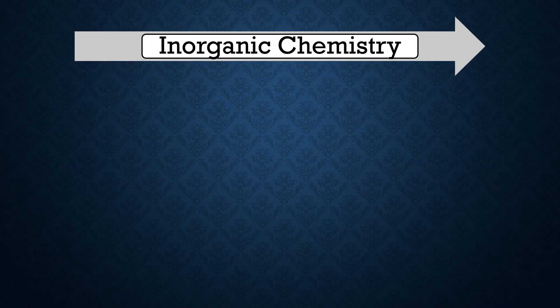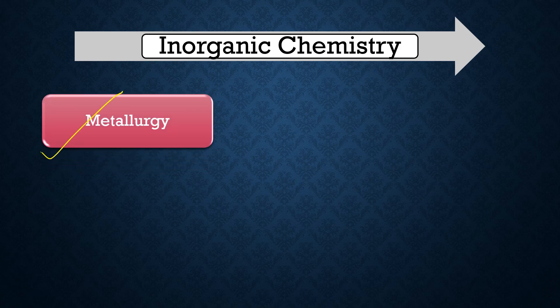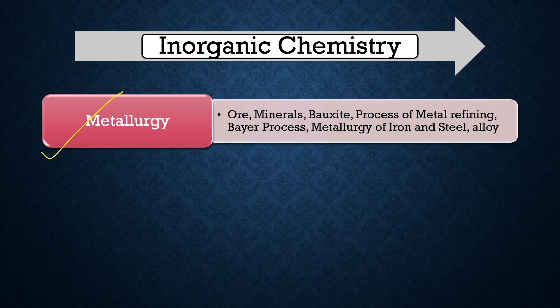First, we will start with inorganic chemistry. The most important topic is metallurgy. NALCO — National Aluminium Company — is basically dealing with alloy-related materials. They are actually refining different kinds of alloys, mostly bauxite. They are preparing carbon steel and other materials using alloys. So the important topics of metallurgy are: ores and minerals, bauxite, and the process of metal refining.